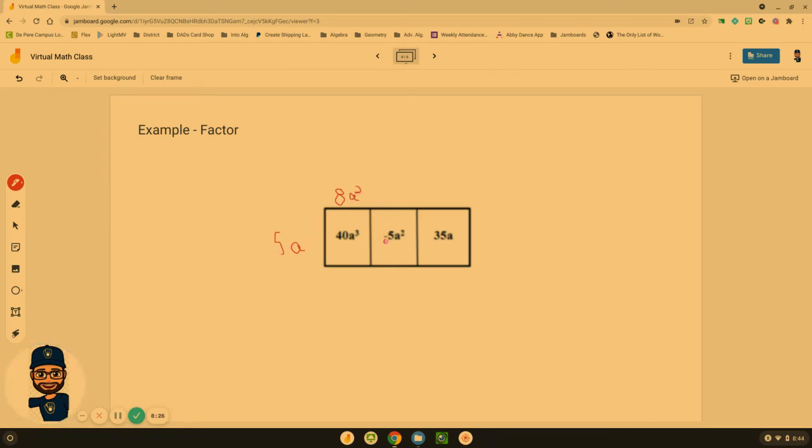Now we go to the next one. 5 times what is negative 5? That's negative 1. A times what is A²? That's one more A. 5A. So 5 times what is 35? That's 7. A times what is A? Nothing. I don't need any more. So the greatest common factor will go out front. And we're left with 8A² minus 1A plus 7. Because we have a positive 7 on the end.